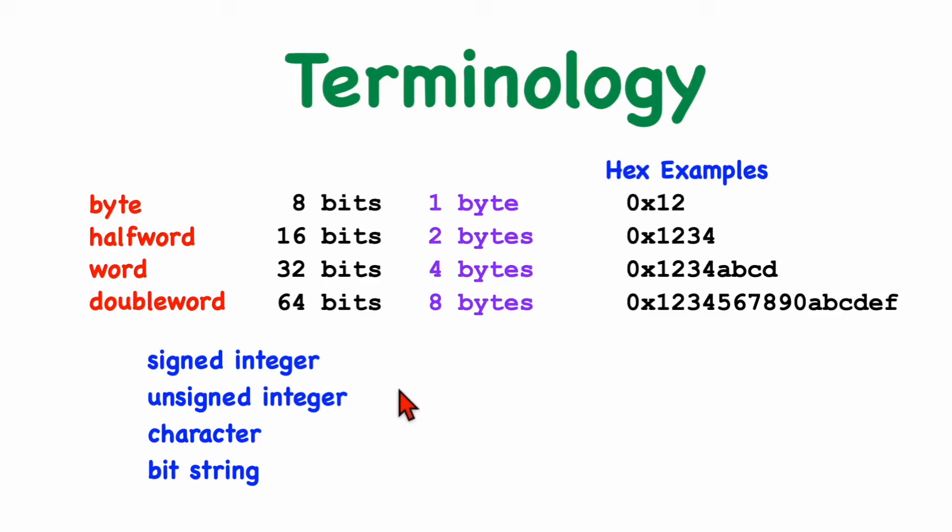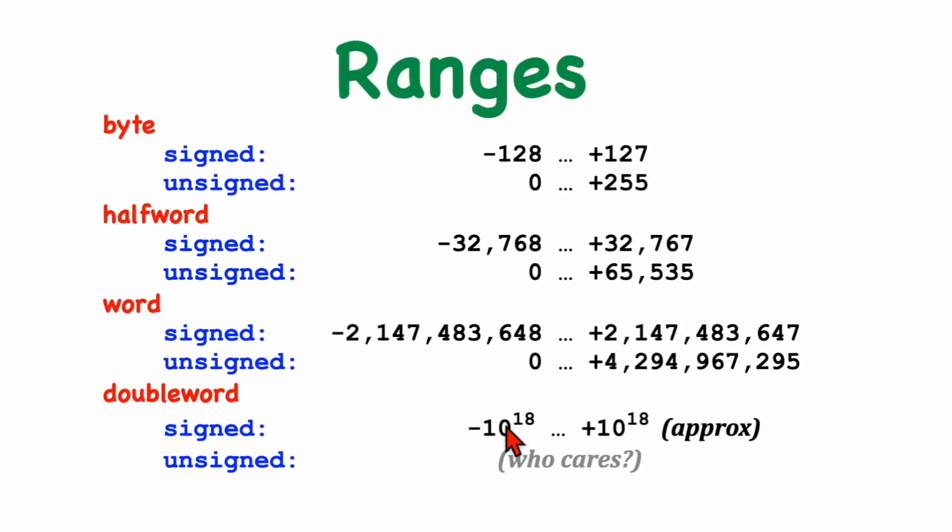So what does the data contain or represent? Well it might be an integer, either represented in signed notation or unsigned representation, or it could be a character, particularly if we're looking at individual bytes, or it could be a string of bits. There are two ways to represent integers. There is signed representation, and there is unsigned representation. And so here I'm showing the ranges for bytes, half words, words, and double word integers.